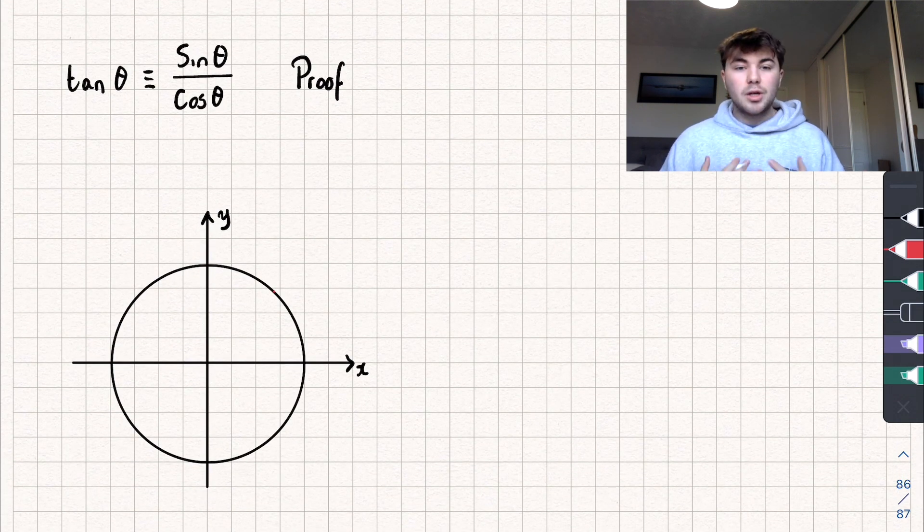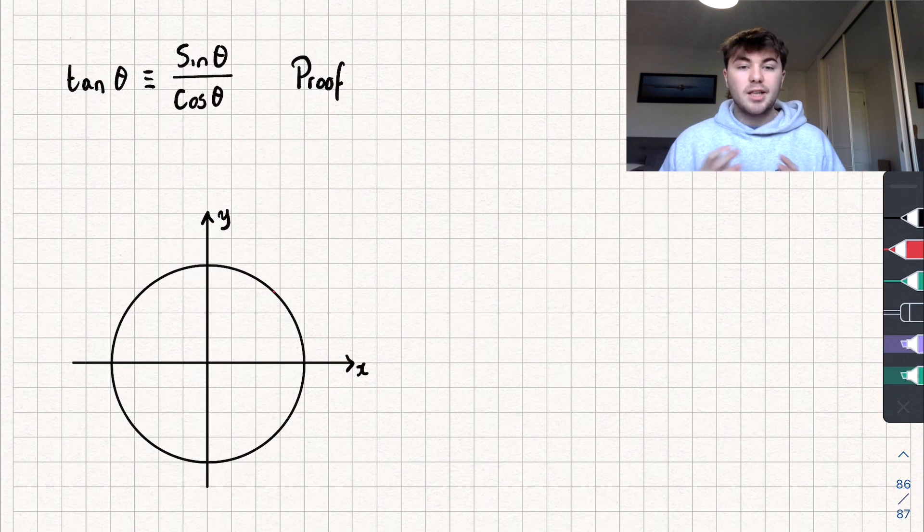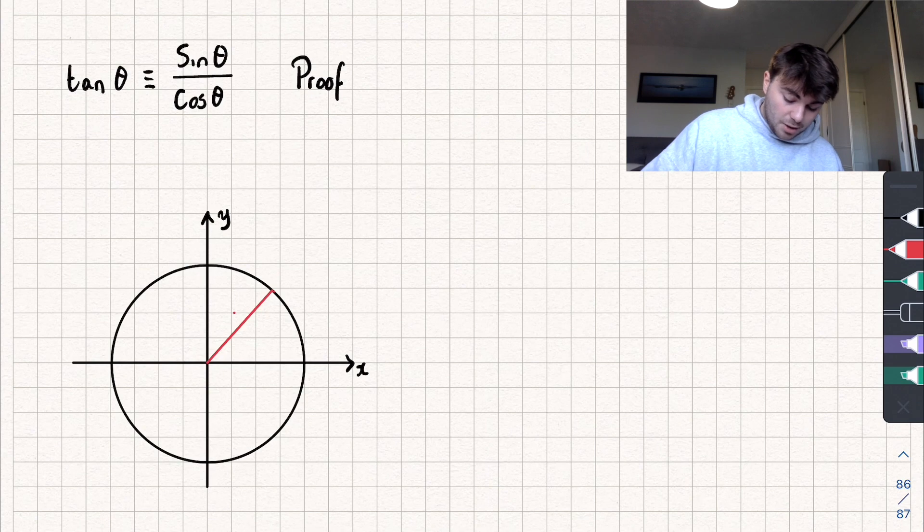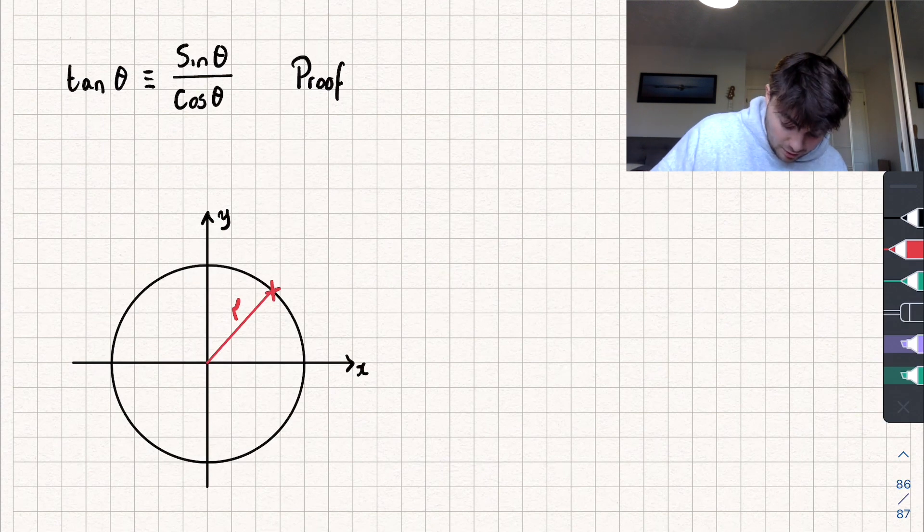To do this we're going to take the xy plane and on it I'm going to draw a generic circle which is centered at the origin. I'm now going to add on a radius to this circle like so and I'm going to say this radius has a length of r. Now where this radius touches the circumference, so this point here, I'm going to say that has coordinates xy like so.